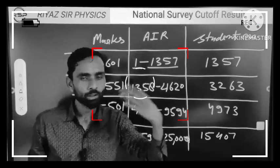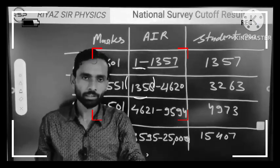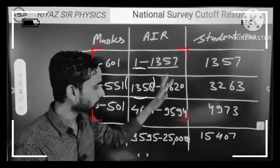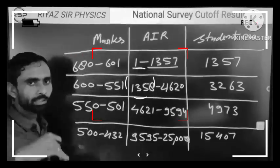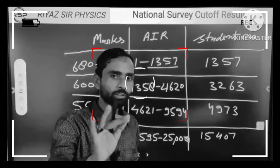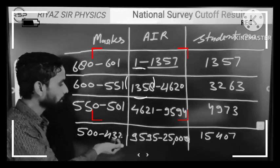One more thing is that some seats increase every year. If it happens this year as well, then it will go down even further from 25,000. If we talk about the chances of SC and ST, then the approximate of General, OBC, EWS will remain the same.